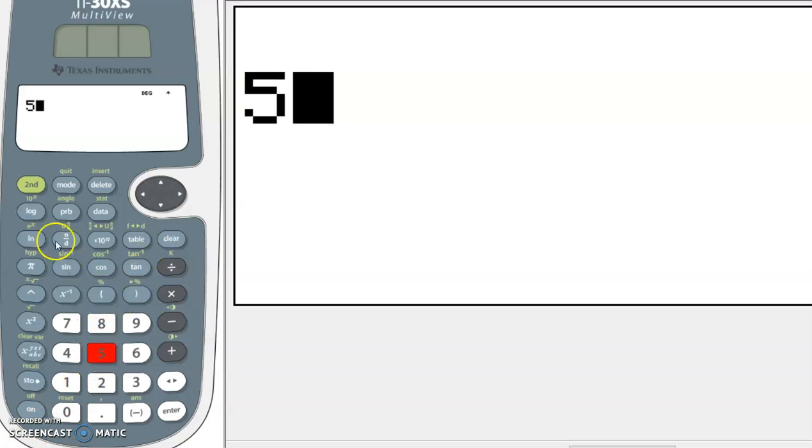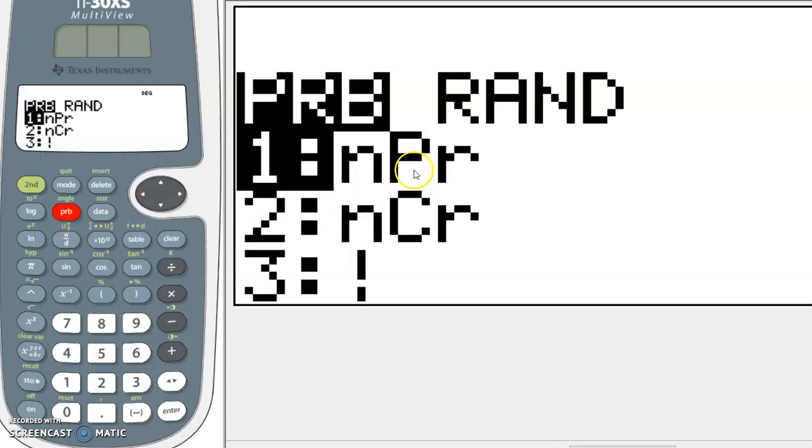First, you type the five, and then you click the probability button. And you see that the permutation option is number one. Combinations would be number two. So I'm just going to hit enter.